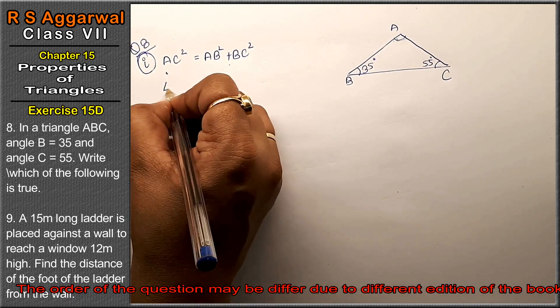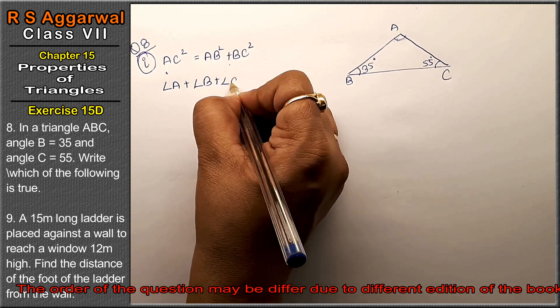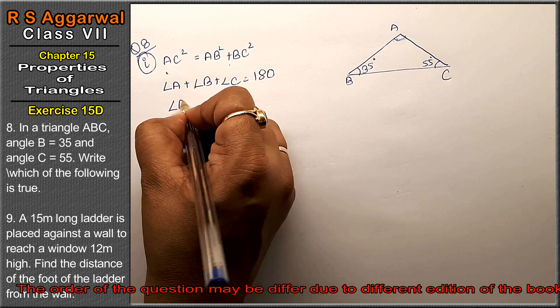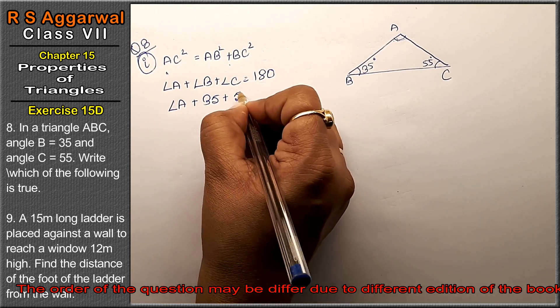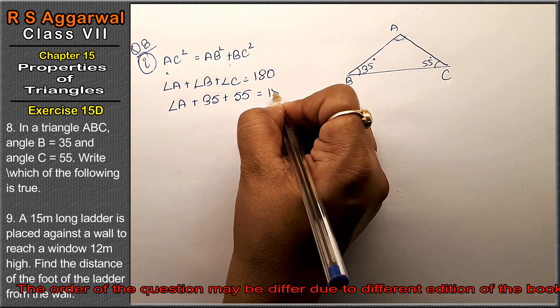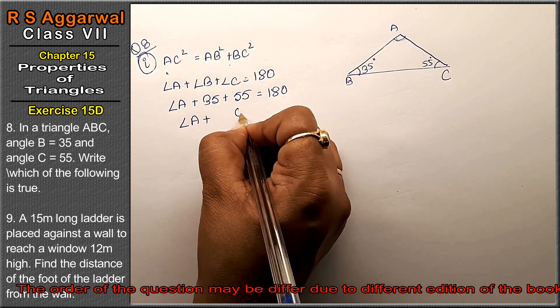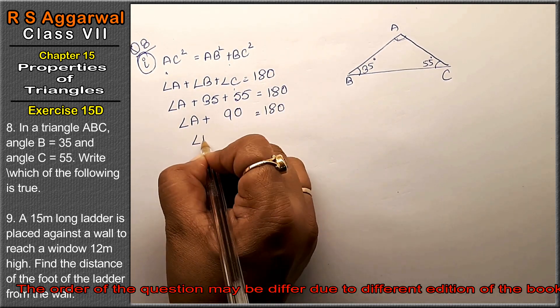We know angle A plus angle B plus angle C equals 180 degrees. So angle A, we need to find. Angle B is 35 degrees and angle C is 55 degrees equals 180 degrees. So angle A is how much?